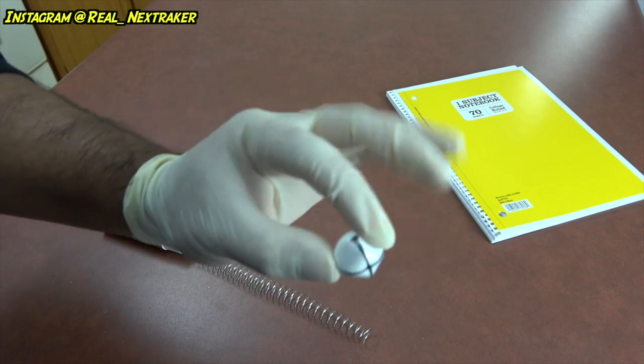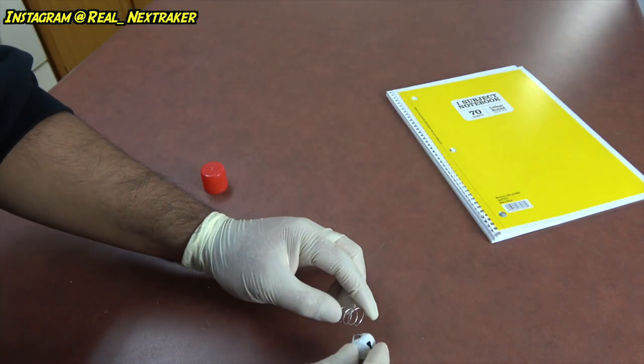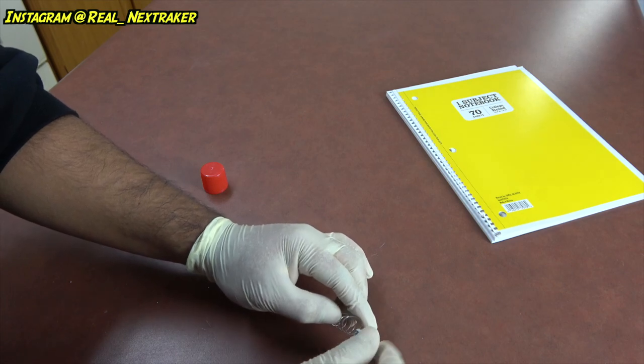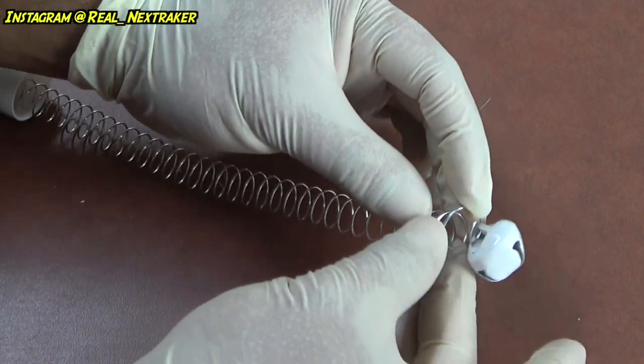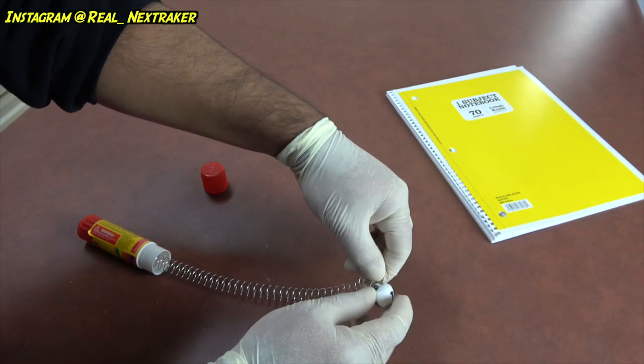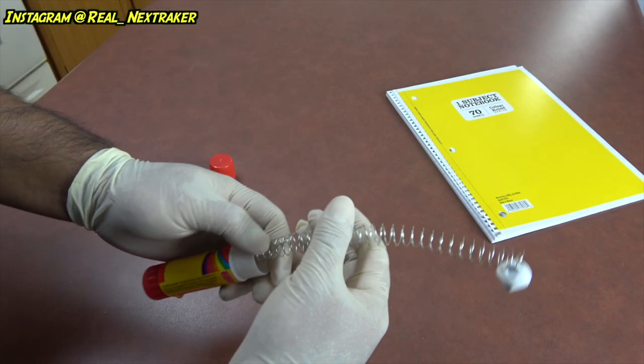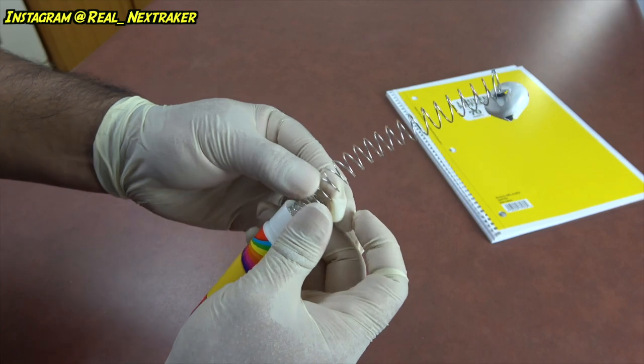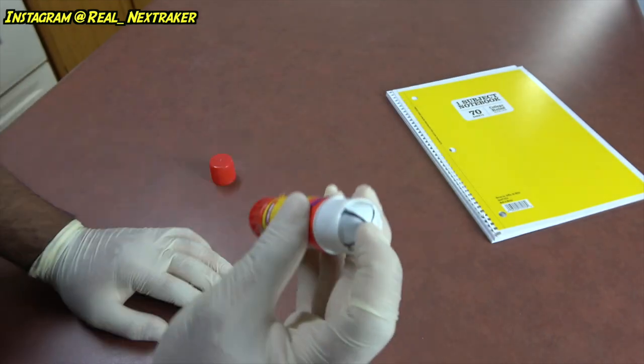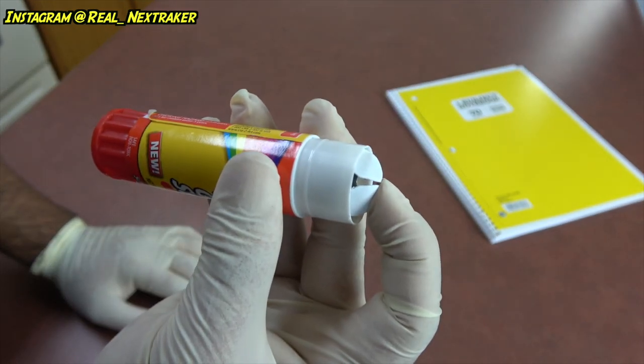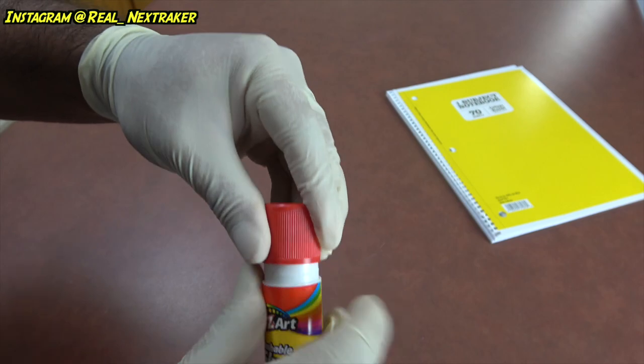As far as the other end of the spiral, I'm gonna attach a little bell like this one. Once it looks like this, just push the spiral inside the glue stick container. The last step is to put the cap on and we have completed our little gag toy.